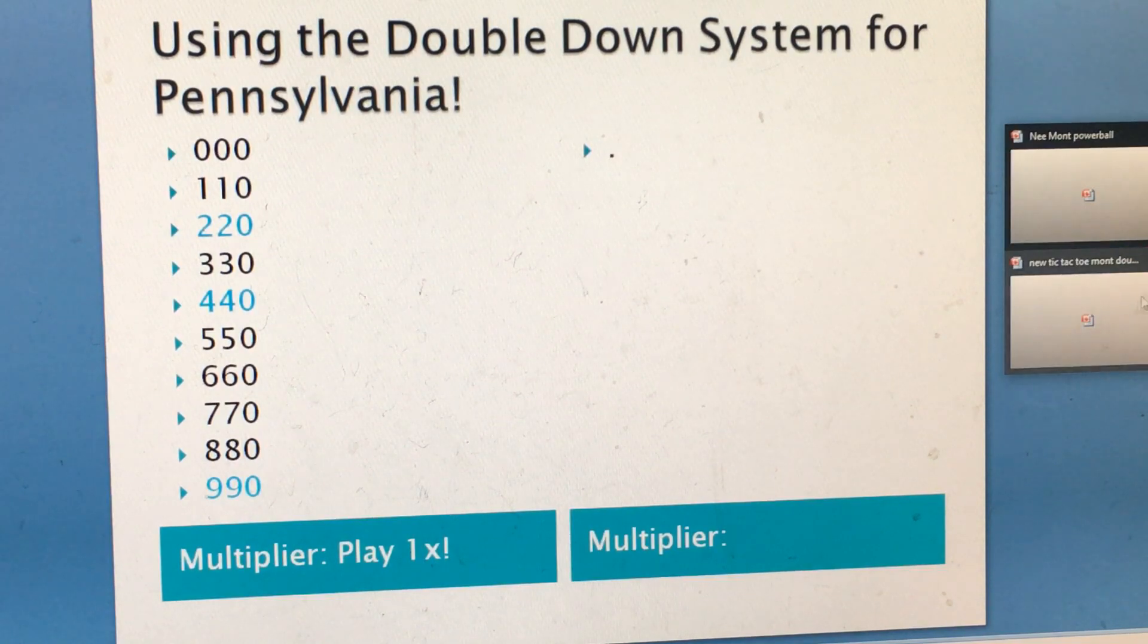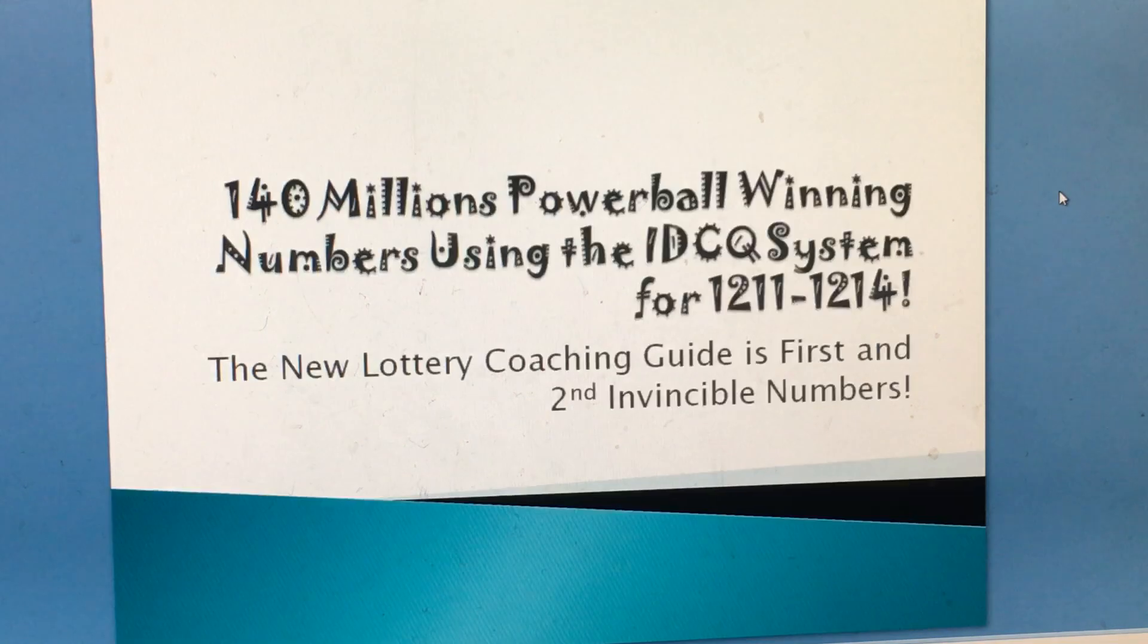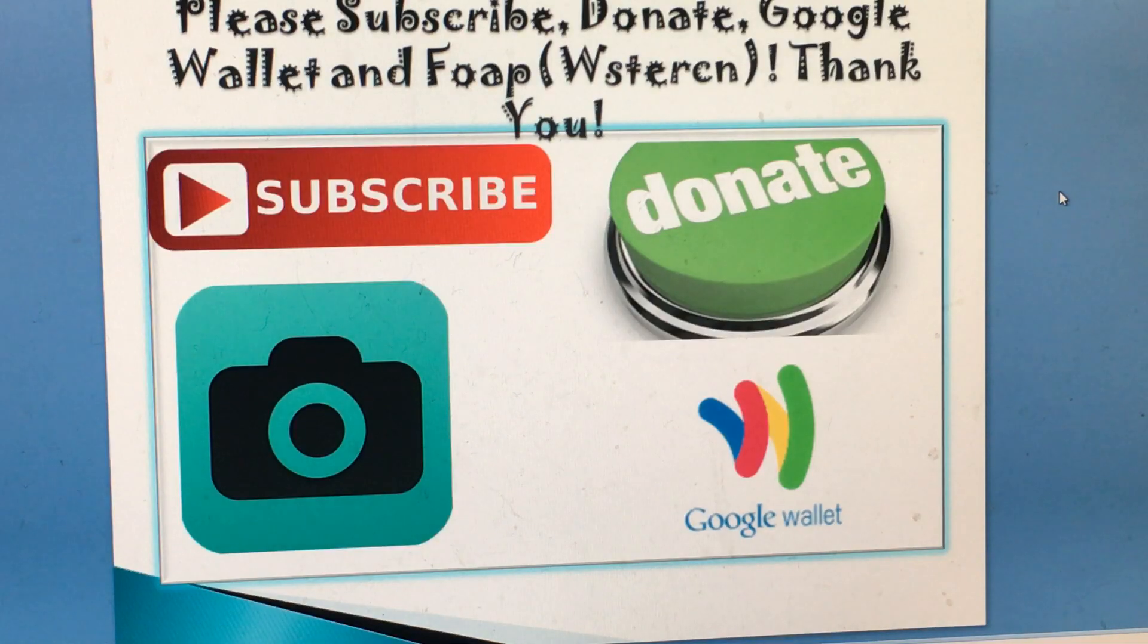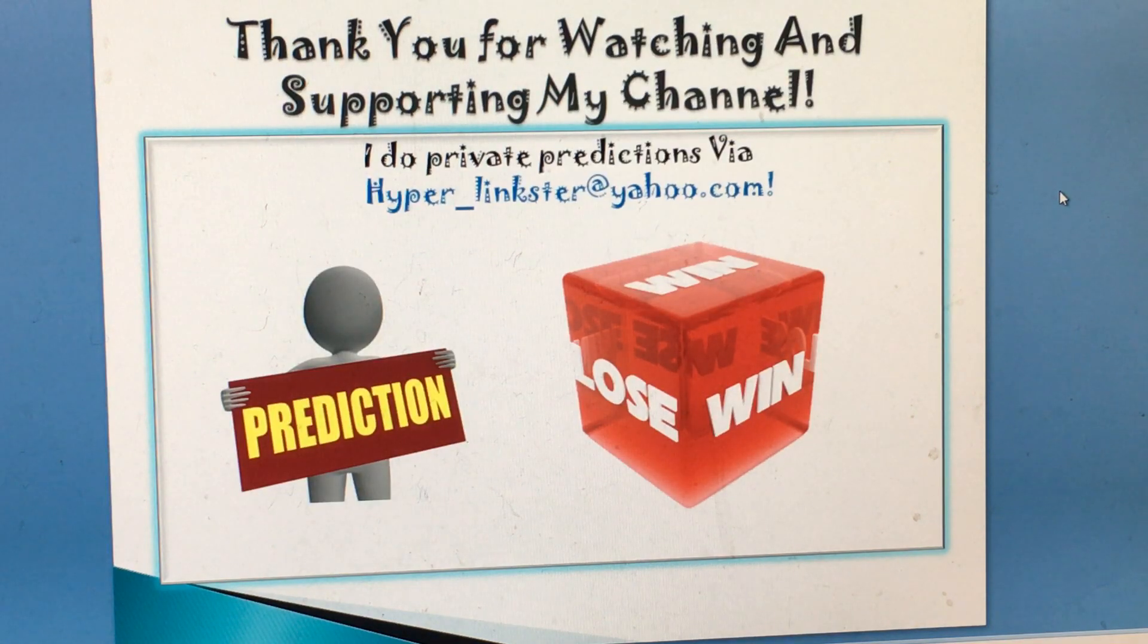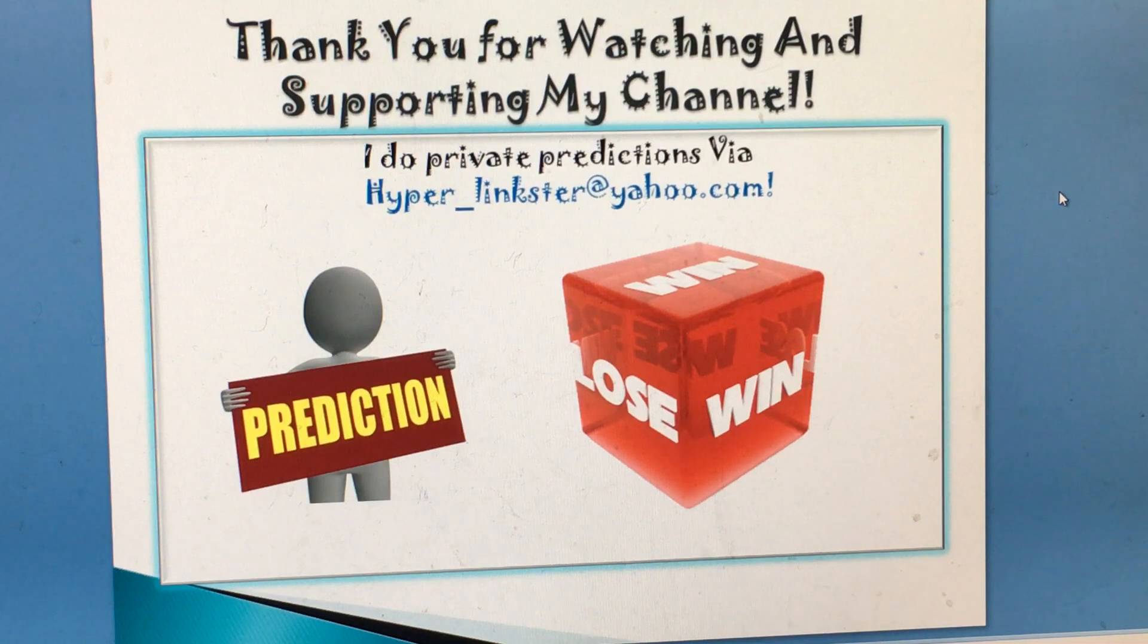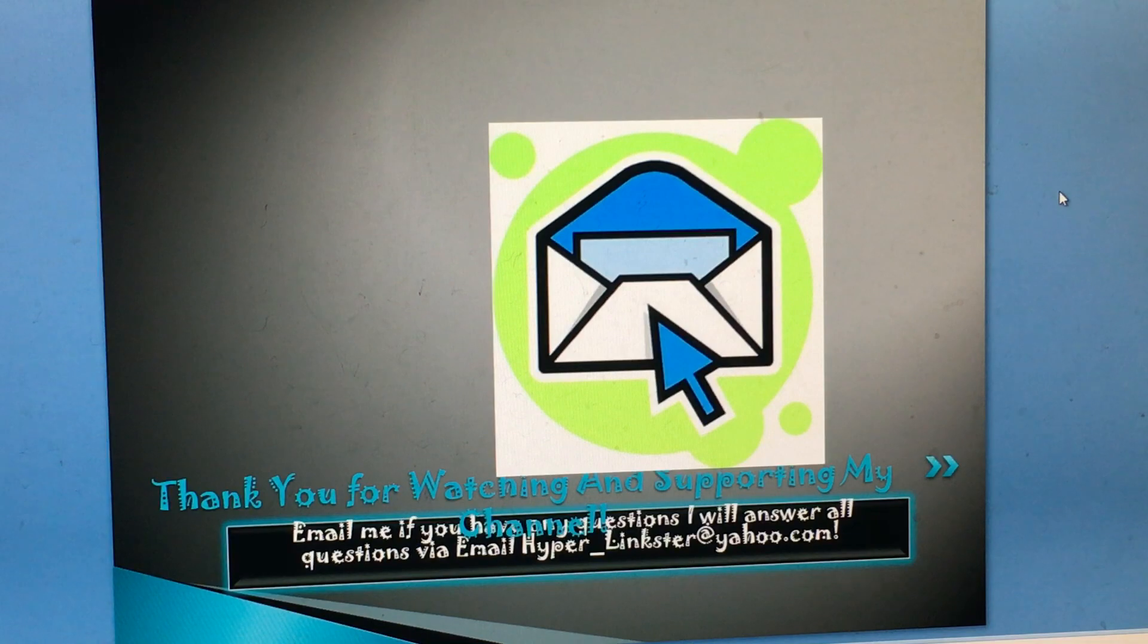Now, let's get back to the Powerball system. Before we start, the Powerball is now 140 million. You can subscribe, donate, share, and like my video. And use the closed captioning button. Remember, nothing is guaranteed. Email me at hyper_linkster at yahoo.com for any game prediction or requests. I'll be glad to help you out on this game, Mega Millions also, and any other game.